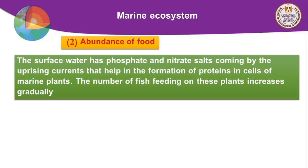To understand the importance of nutrients, consider their absence: in the absence of phosphates and nitrates, plants will not be able to make protein, fish will not be able to feed on plants, and finally the region will be poor in fish — a poor fishing region.